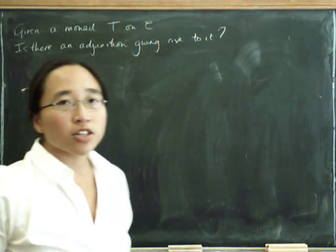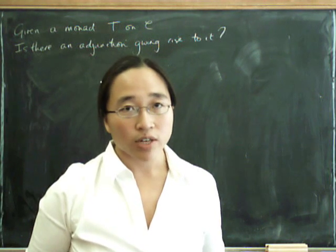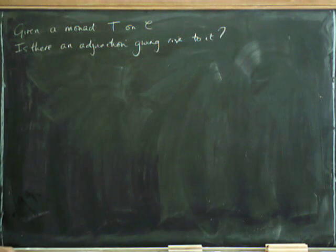Remember, given an adjunction F left adjoint of G, it gives rise to a monad GF. That's what giving rise to means here.